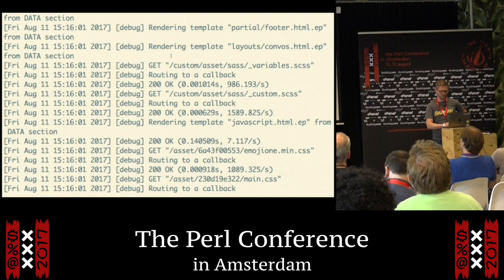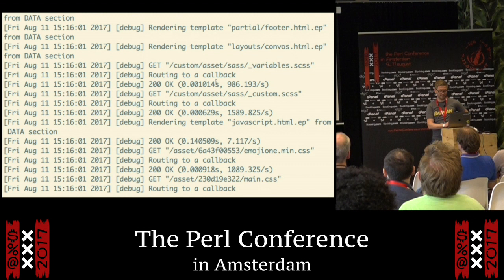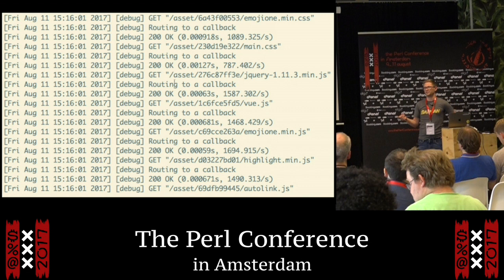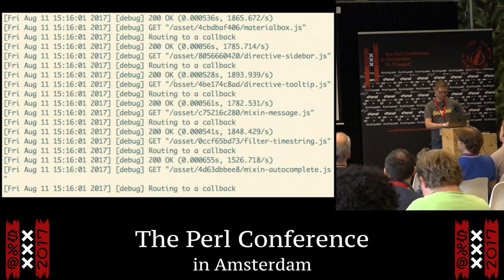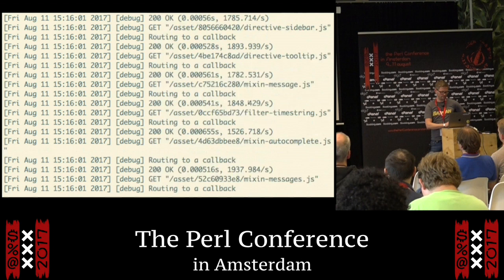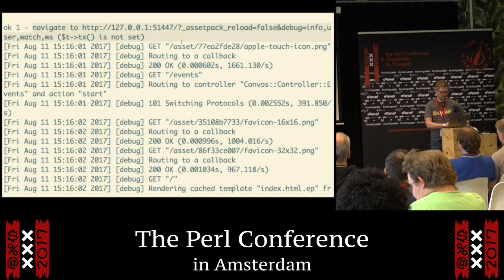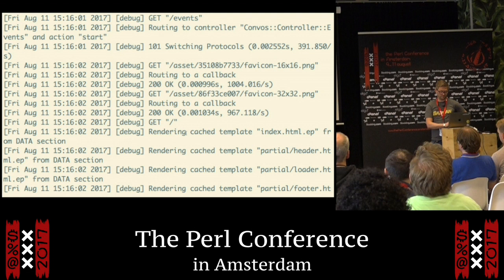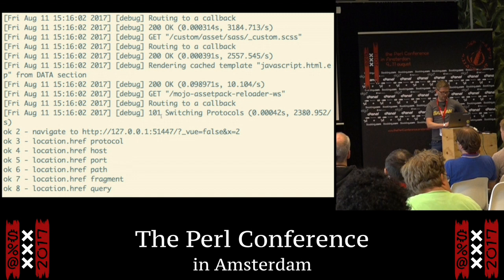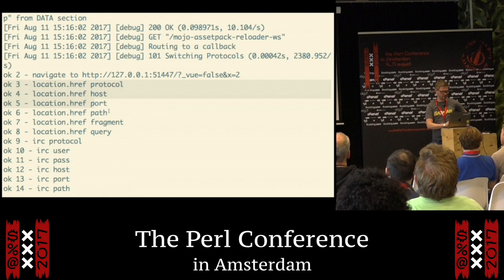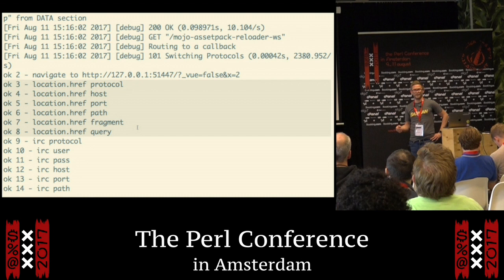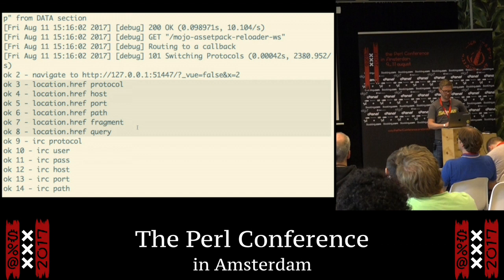Here you can see that it makes an initial request and then, since it's inside the browser, it's going to get all of the scripts, all the JavaScript, and all the CSS as well. There are a bunch of GET requests that go into your application started up inside the unit test. We can see that it loads the URL.js library, then there are a bunch of requests, and it starts navigating to the correct page. Since it's just normal is and is_deeply functions, it's not going to show you any extra debug information — it's just regular Perl unit tests.